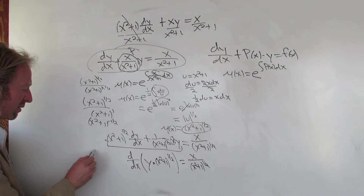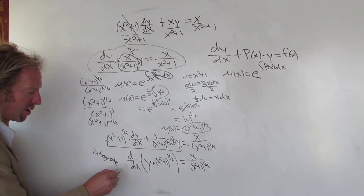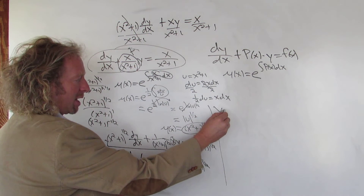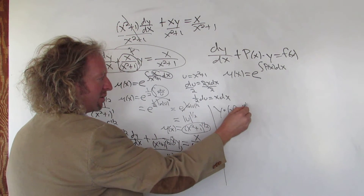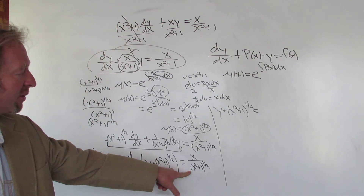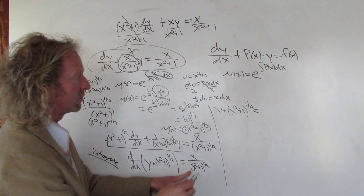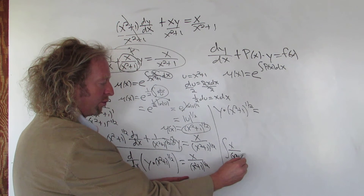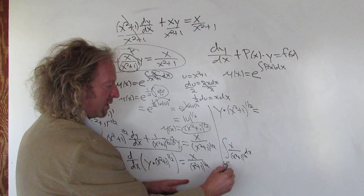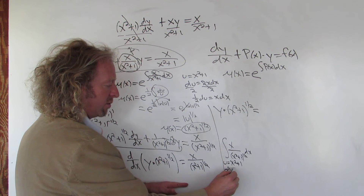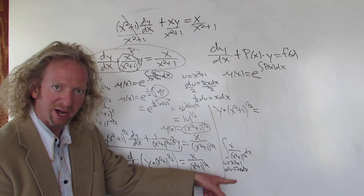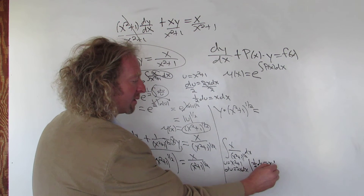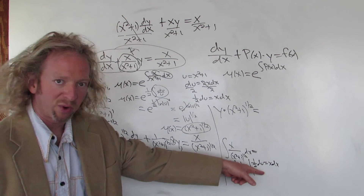To finish, we integrate both sides. Integrating the left side just gives y·(x²+1)^(1/2), since the d/dx cancels. For the right side, we need to integrate x/(x²+1)^(1/2) dx. We do another u-substitution: let u = x²+1, so du = 2x dx. We divide by 2 to match x dx, giving 1/2 du = x dx.